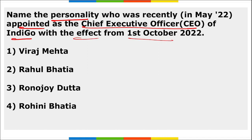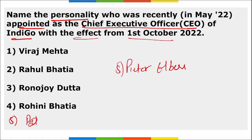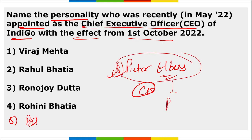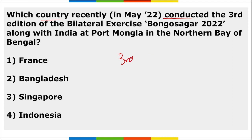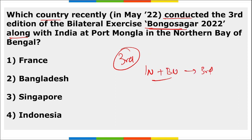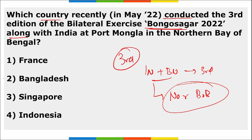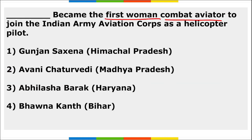Pieter Elbers was appointed as the CEO of IndiGo with effect from 1st October 2022, replacing Ronojoy Dutta. India and Bangladesh conducted the third edition of the bilateral naval exercise Bongo Sagar in the northern part of the Bay of Bengal.